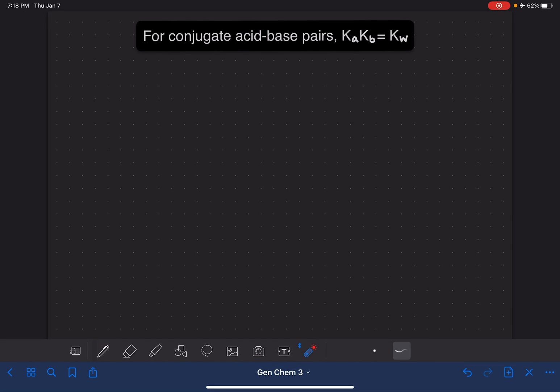For a pair of conjugate acids and bases, the Ka value of the acid times the Kb value of the base is always going to be equal to Kw. In this video, I'm going to walk through the derivation of that relationship.